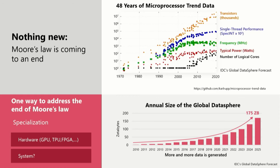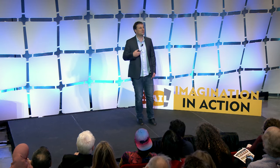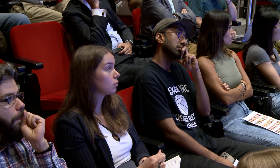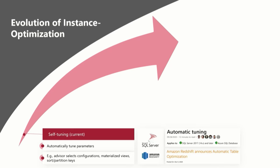We already see specialization happening on the hardware front — things like GPUs, FPGAs, TPUs, and so on. What we are wondering is: can we do something very similar with systems? Can we improve systems to be specialized for a workload to get much better performance out of them? This is actually not a new idea — every system out there has a bunch of knobs, and by tuning those knobs you're specializing it to your workload.